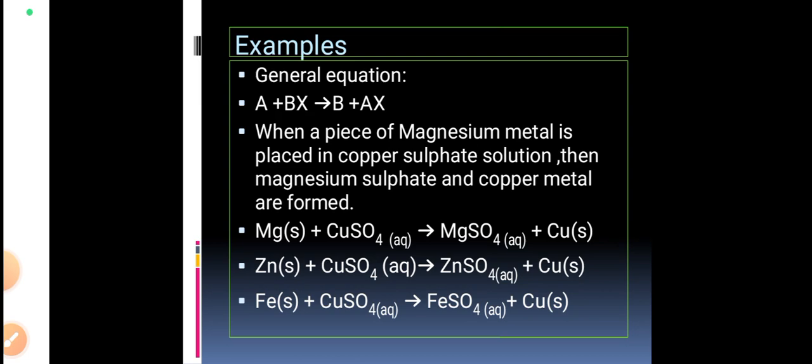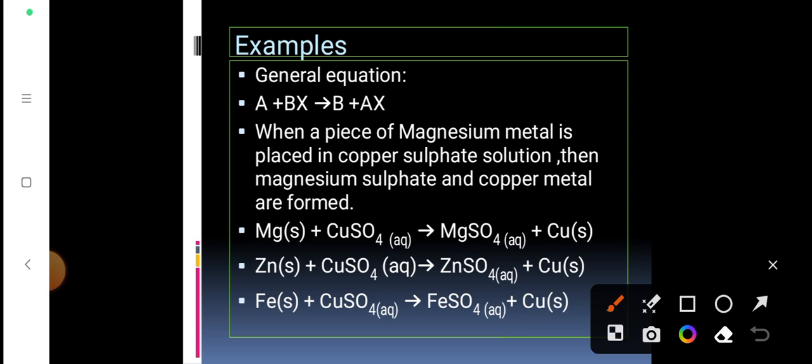Here are some equations: magnesium reacting with copper sulfate gives rise to magnesium sulfate and copper. When we look at the reactivity series, magnesium is more reactive than copper, hence magnesium in solid form displaces copper from copper sulfate in aqueous solution, giving rise to magnesium sulfate (aqueous) and copper (solid).